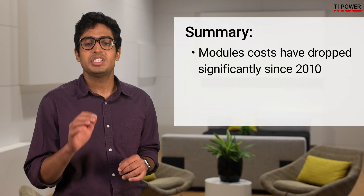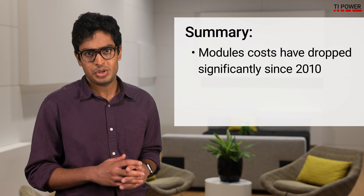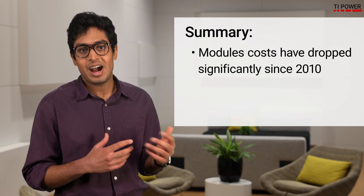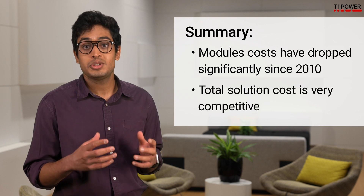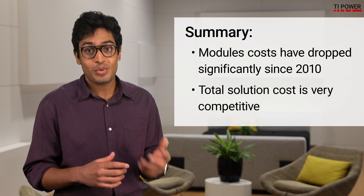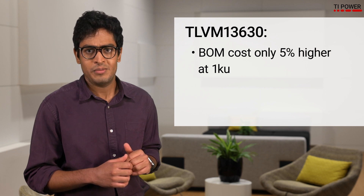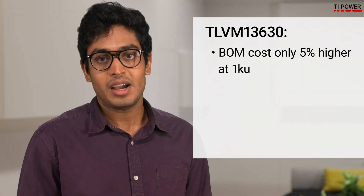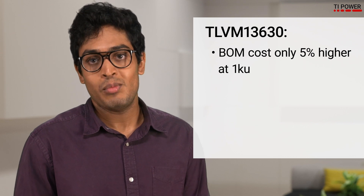Designers must ask themselves if they can recoup that slightly higher material cost of the module-based solution with the potentially significant cost savings that come with a shorter design time. In summary, module costs have come down significantly since the first release in 2010. And even though the module may carry a higher IC price tag, the total solution cost can be very competitive with that of a discrete converter solution. In the case of the TLVM13630, the BOM cost is only about 5% higher at 1KU. Factoring in the PCB cost savings and design time savings, the TLVM13630 could be the more cost-effective option.